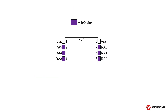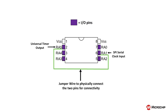For instance, let's consider the SPI peripheral, which may have limited internal selection options for its clock input. When a peripheral such as the universal timer isn't an option as a clock source for the SPI, you will need to use two I/O pins to connect the timer's output to the SPI clock input. However, this approach might not be optimal, especially in low pin count devices where the I/O pins are a valuable resource.